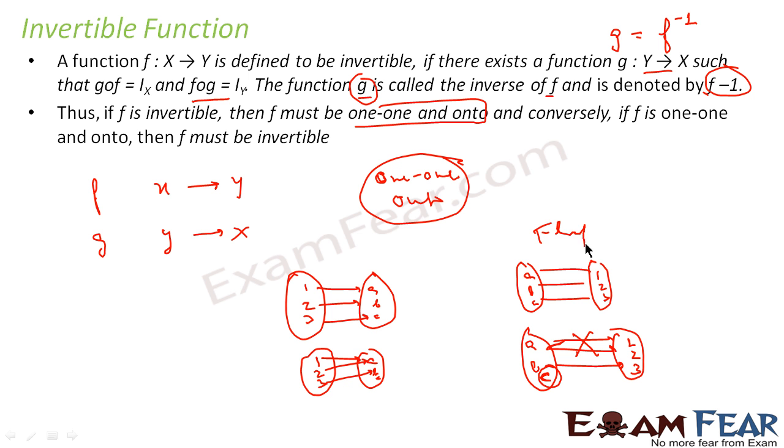This is the function. You flip it and this becomes the inverse also. So if this is f, this is nothing but f inverse, correct? This is f, this is f inverse. And for this, the function f has to be one-one and onto.